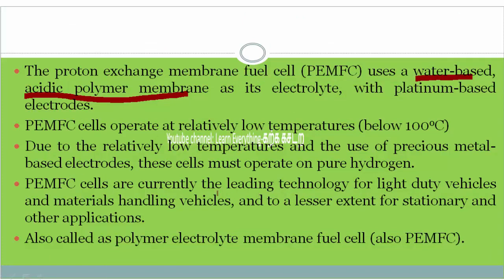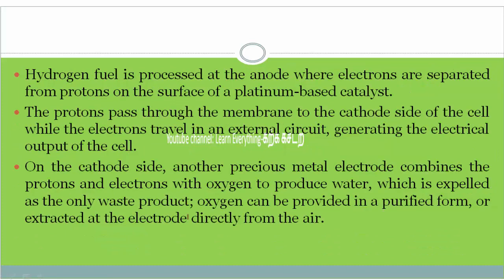PEMFC cells are currently the leading technology, and most light-duty vehicles use them. In the polymer electrolyte membrane fuel cell, hydrogen fuel is processed at the anode, where electrons are separated from protons on the surface of the platinum-based catalyst: H2 → 2H⁺ + 2e⁻. The protons pass through the membrane to the cathode, where they mix with oxygen to form H2O, while the electrons flow through the external circuit generating electricity.